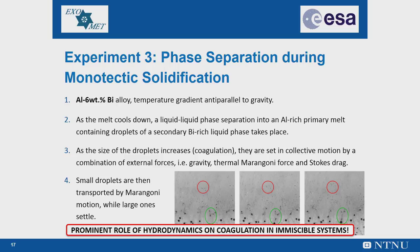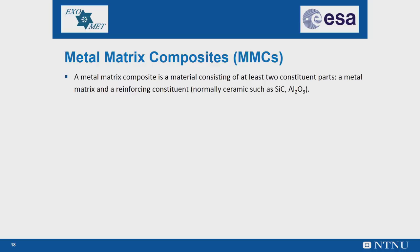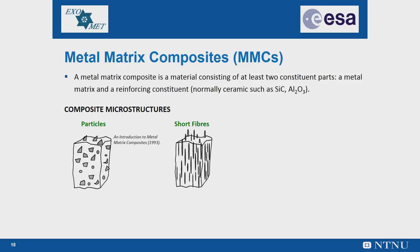Therefore, X-ray video microscopy is a very powerful tool to investigate solidification phenomena occurring in different metallic alloy systems. But how can we meaningfully use this instrument to investigate solidification and microstructure evolution in metal matrix composite materials? A metal matrix composite, also called MMC, is a material consisting of at least two constituent parts: a metal matrix and a reinforcing constituent, normally ceramic — such as silicon carbide or aluminium oxide — though the reinforcement can sometimes be metallic. There are three kinds of metal matrix composites: particle-reinforced MMCs, short-fiber or whisker-reinforced MMCs, and continuous-fiber or sheet-reinforced MMCs.